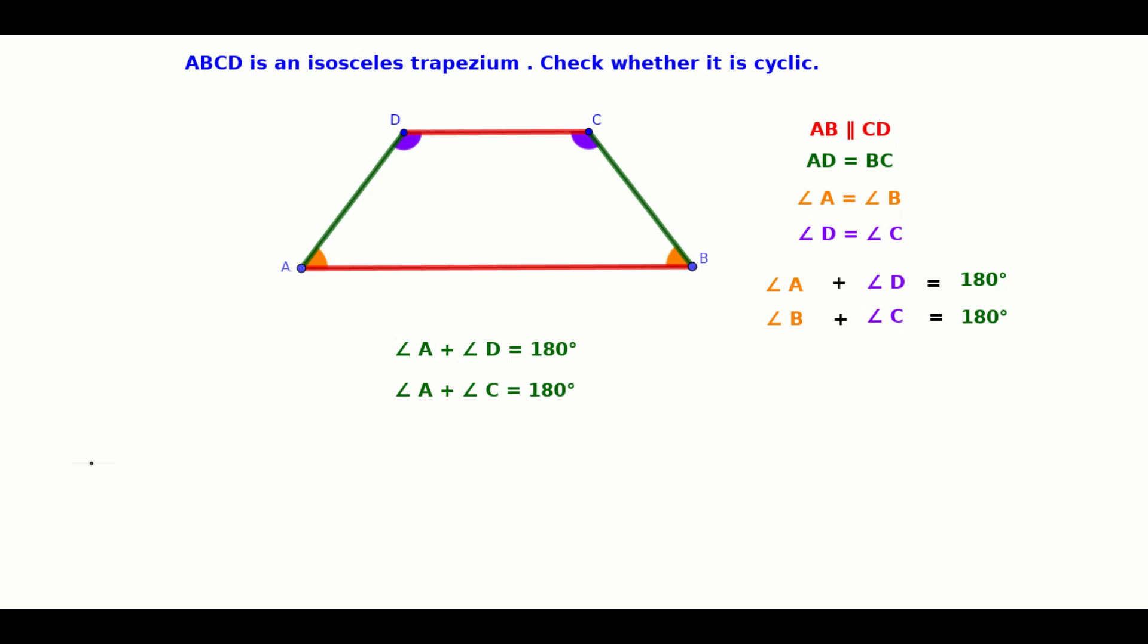Where A and C are the opposite angles of this isosceles trapezium. And the sum of those two angles is 180 degrees means the isosceles trapezium is cyclic.